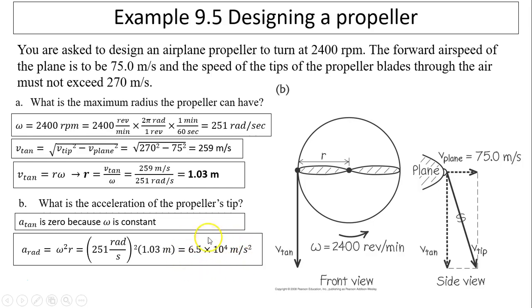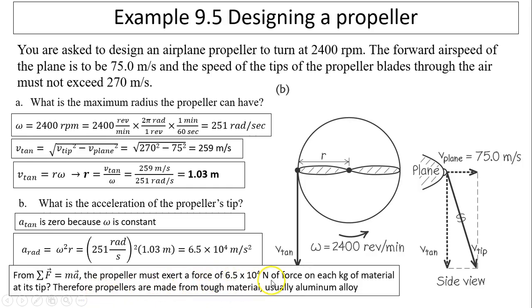As you can see, a_rad is really, really big. That is because this propeller is rotating very, very fast. In order to produce a very fast speed, you must exert a tremendous amount of force. That means there has to be 6.5 times 10⁴ newtons of force on each kilogram of material at this tip. Therefore, the propeller must be made from tough material. Otherwise, it's going to break apart. It's aluminum alloy, kind of light and very sturdy.